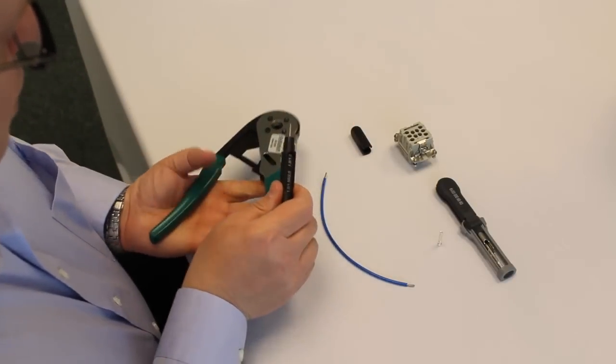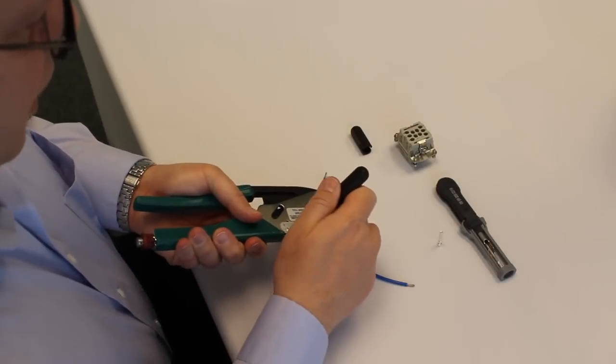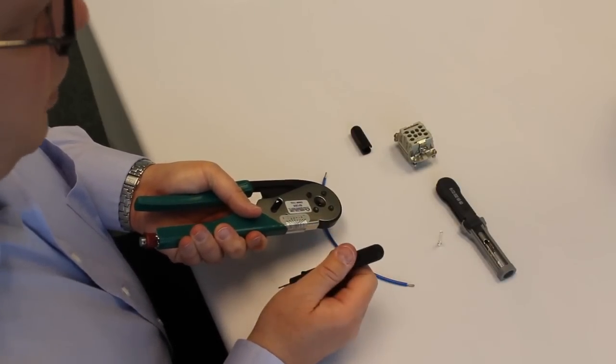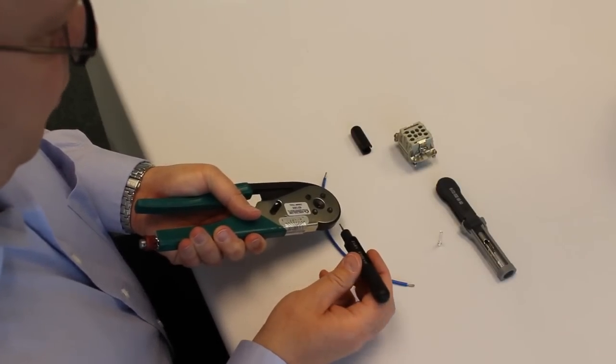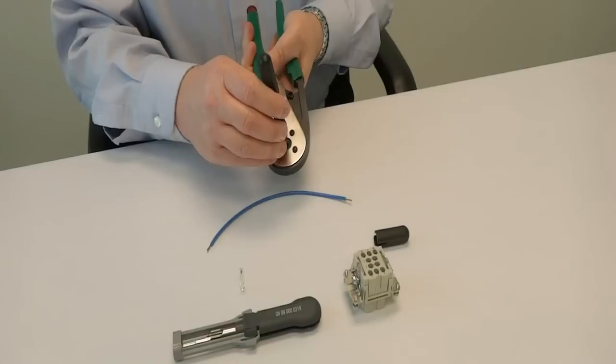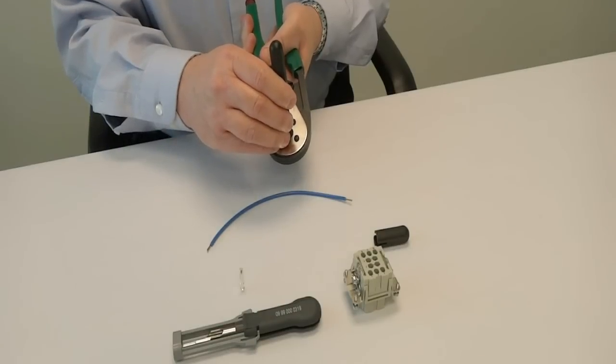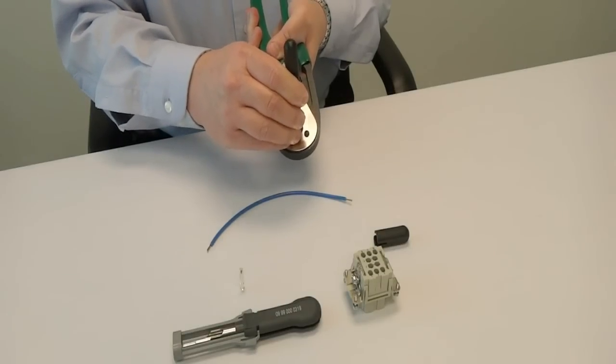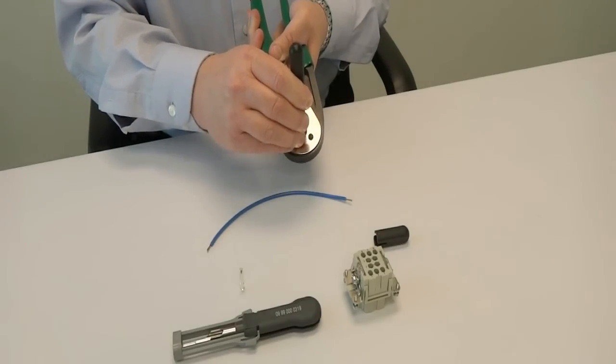To adjust the tool, simply close it to have the indenters closed. This tool has four indenters. It's called a four indenter crimp. And then we can insert the gauge in between the four crimp jaws to check and see how well the tool is adjusted.